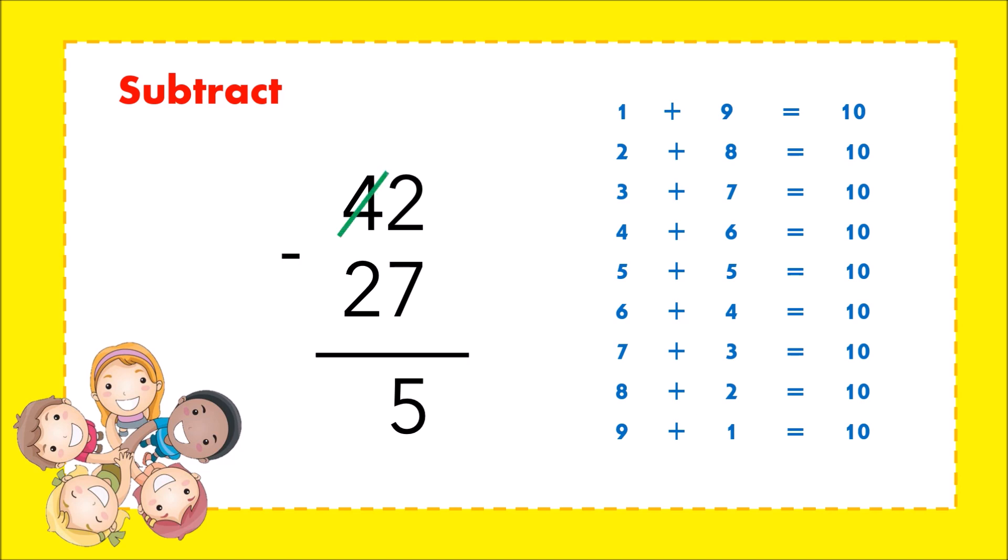Subtract 2 from 3 and the answer is 1. Therefore, the difference of 42 and 27 is 15. Let's answer some more.